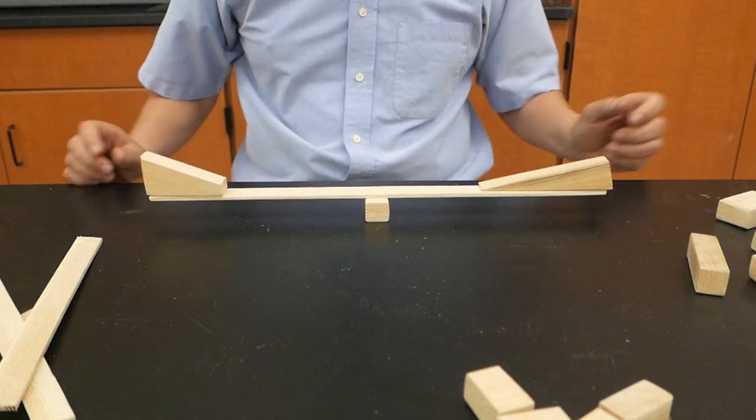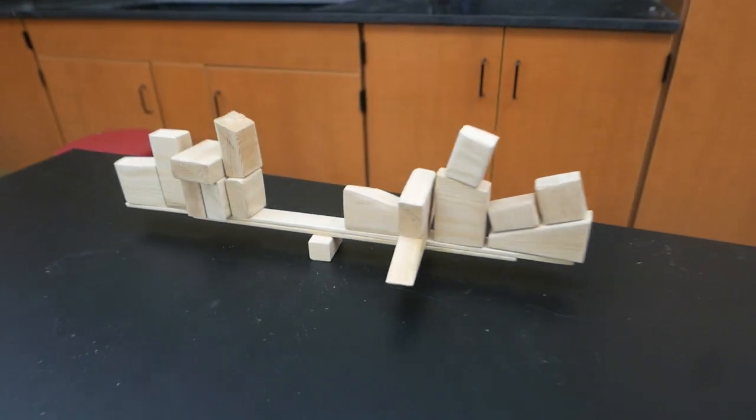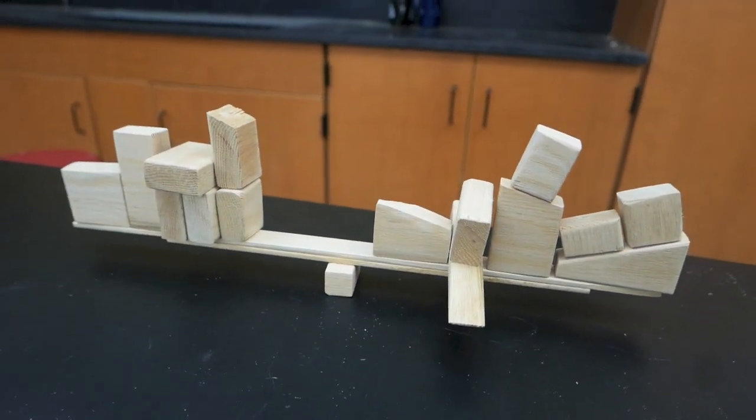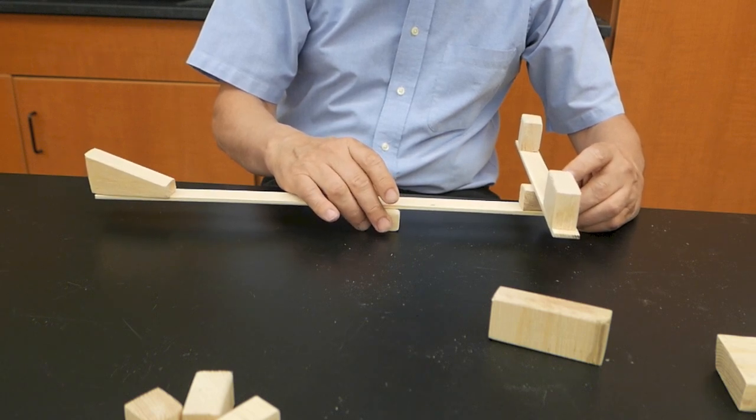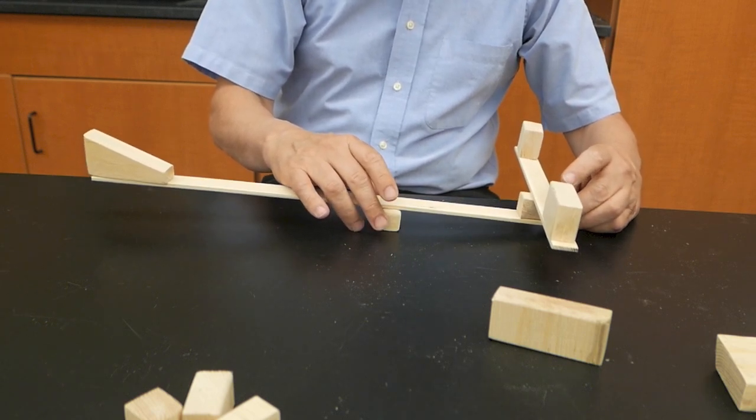We start off by making a single lever. We can add as many blocks as we want to each side and still get it to balance. Or we can add a second lever on top of that first one and get it to balance by adjusting the fulcrum.